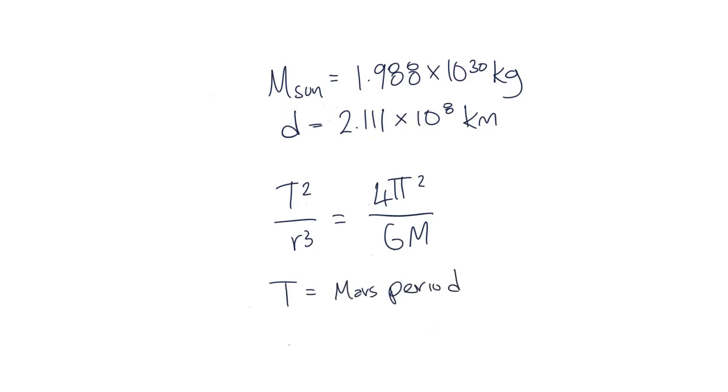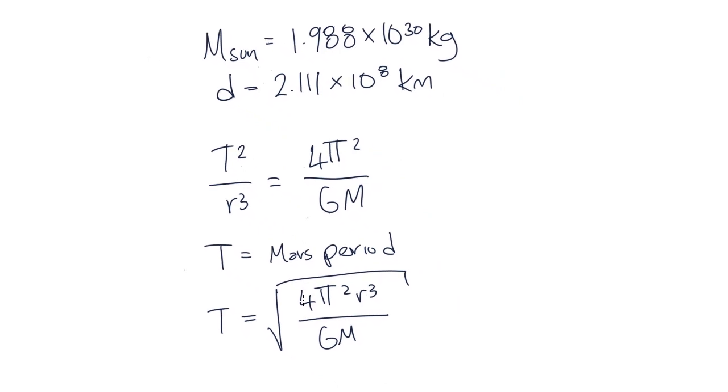For this problem, we would like to find T, the period. So rearranging the equation above, we get that T is equal to 4 pi squared r cubed divided by big G big M, square rooted.